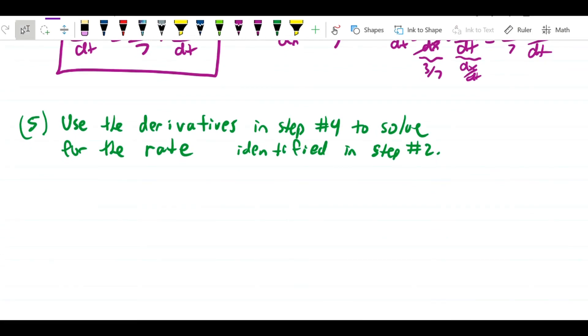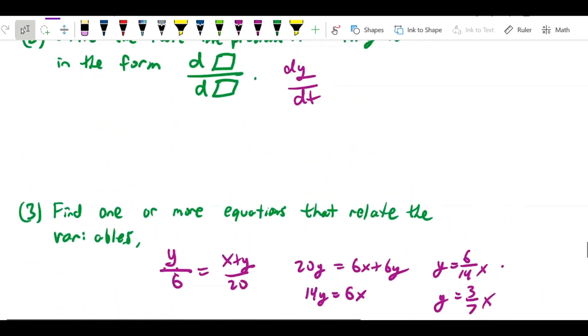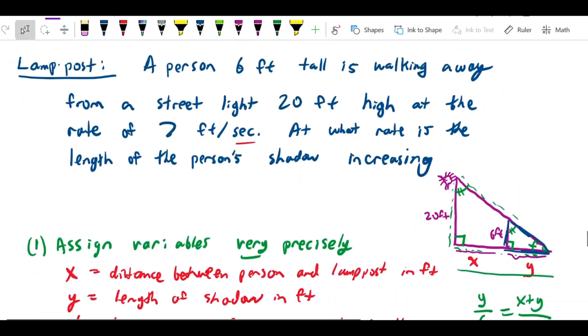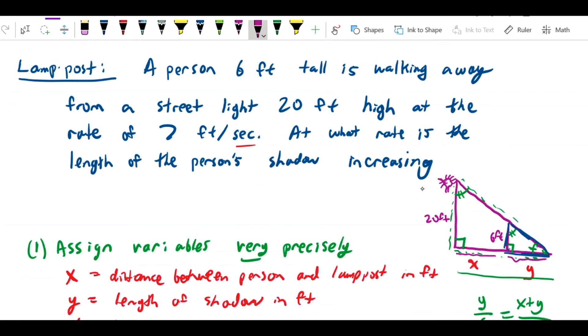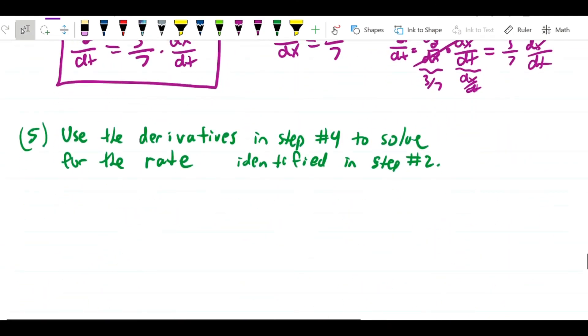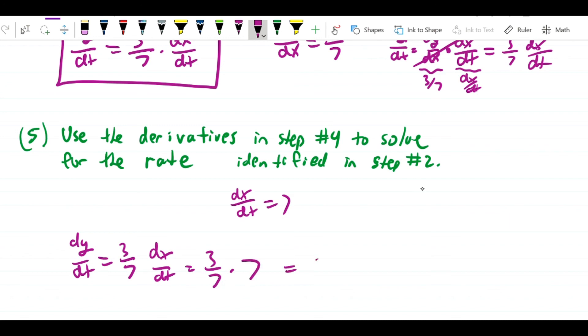So let's use the derivatives in step 4 to solve for the rate identified in 2. We're interested, of course, in dy over dt. And let's see what we're given in the problem. In the problem, we're told that the person is walking away from the streetlight at the rate of 7 feet per second. Well, since the person is here, that means that the thing that's increasing is x. So what we're told is that the change in x per change in time is 7. In other words, dx over dt equals 7. We just got that right from the problem. So since dy over dt is equal to 3 sevenths dx over dt, that's going to equal 3 sevenths times 7, which equals 3.